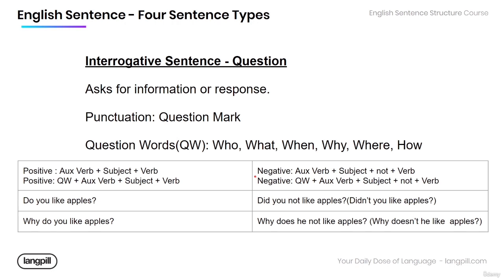For the negative version, the structure changes a little: auxiliary verb, then subject, then 'not,' then the verb. And we also have the version where we add the question word at the beginning. For example, 'Did you not like the apples?' If you want to contract 'did' and 'not,' the 'not' comes forward: 'Didn't you like apples?' Or 'Why does he not like apples?' — contracted to 'Why doesn't he like apples?'